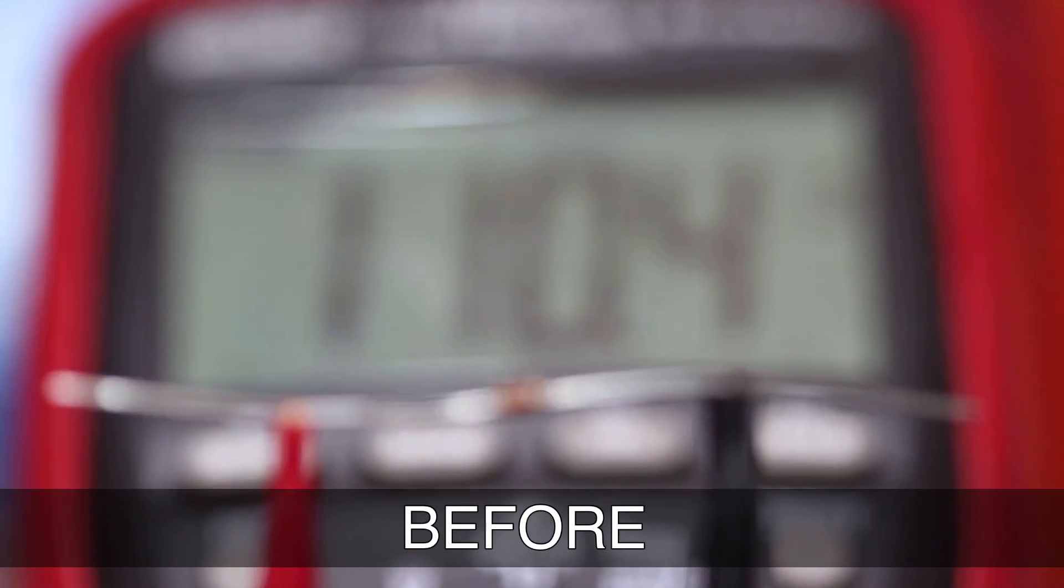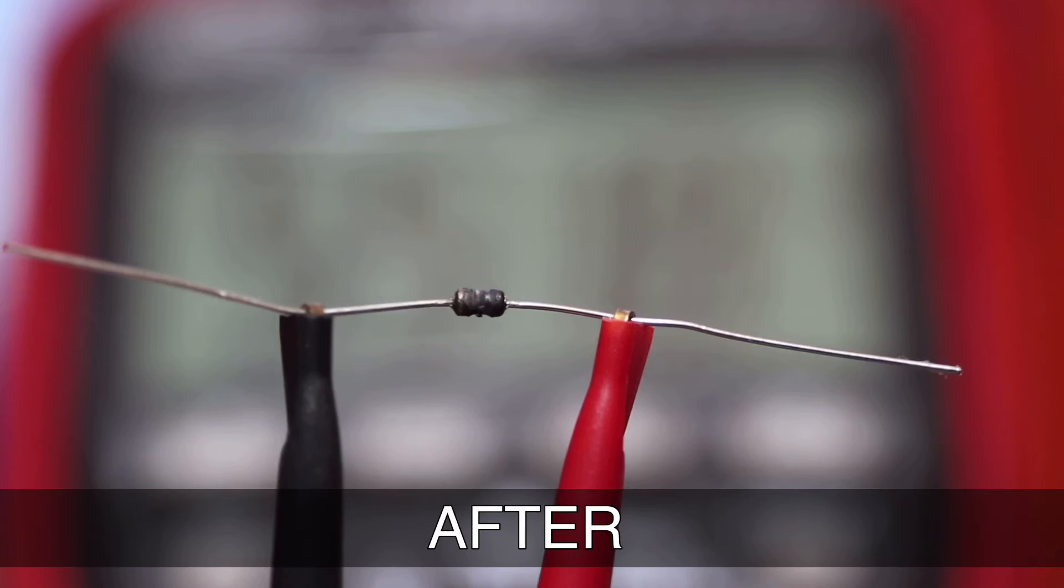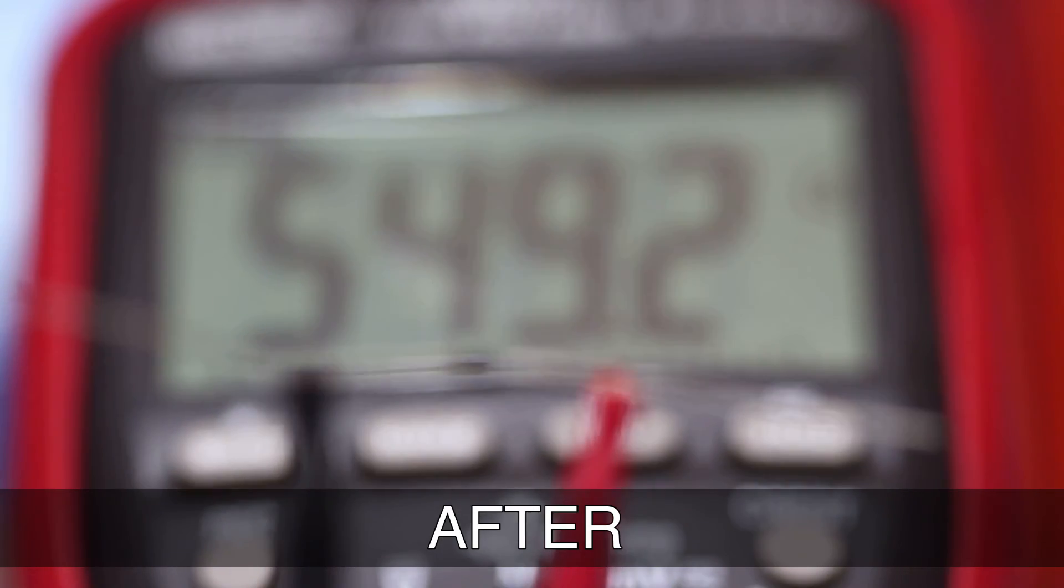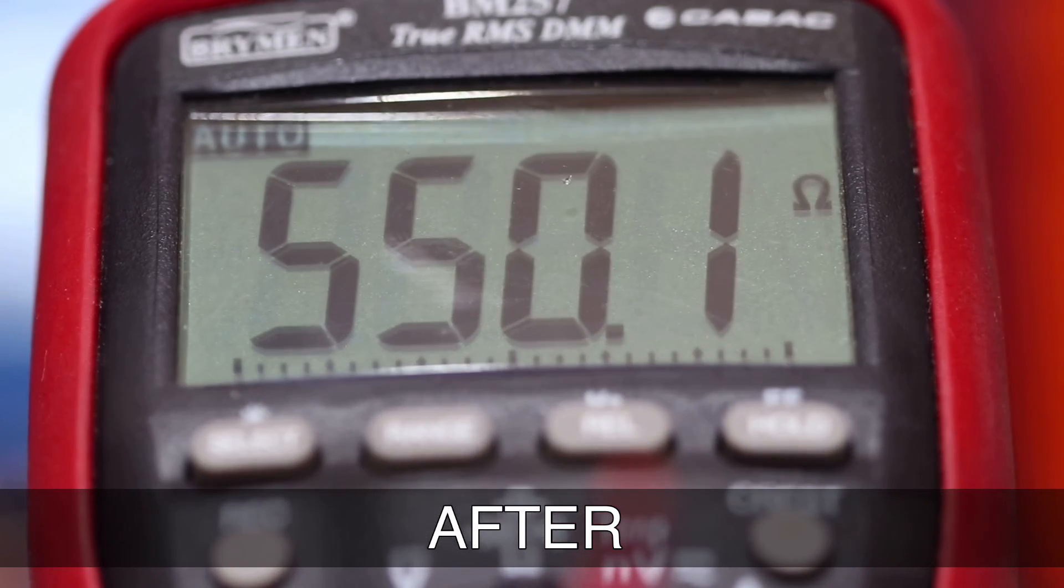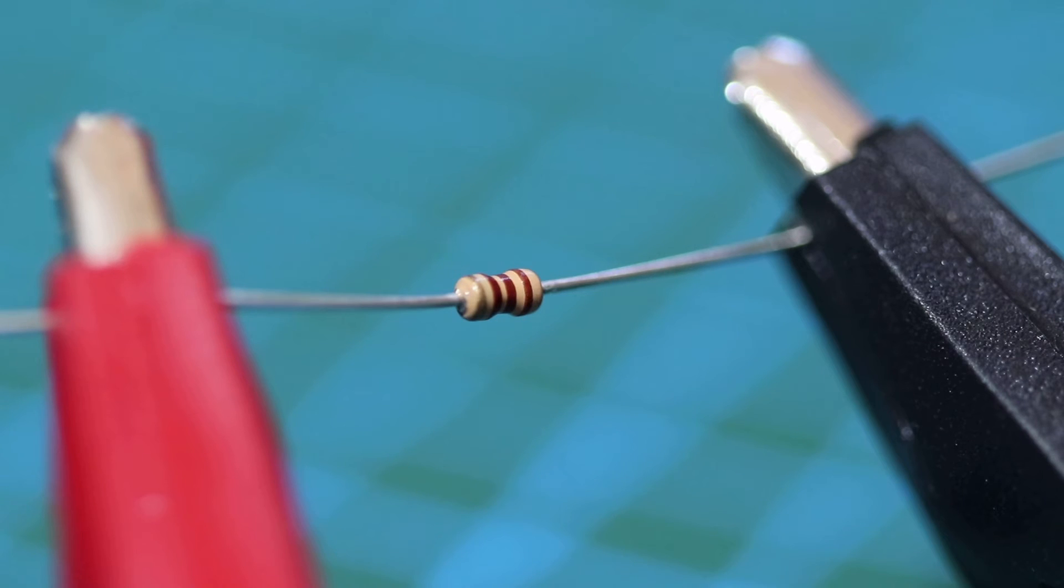If a resistor becomes too hot due to excessive power, it can permanently and significantly change the resistance value due to alteration of the actual physical properties of that resistor. Worst case scenario, it can create internal arcing between the turns of the resistor, or in carbon resistors, an arc between the actual granules of carbon and burn open. And here's what that looks like.